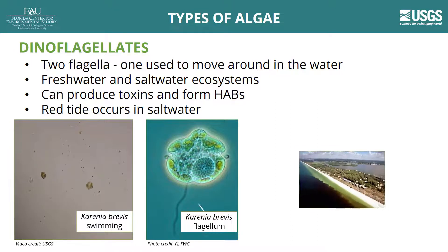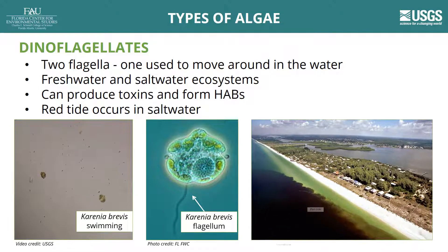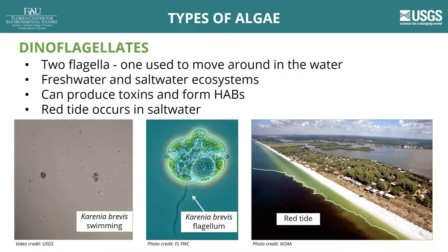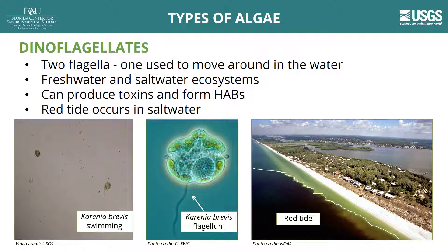Microscopic dinoflagellates have two flagella. One of these flagella trails the organism and looks like a tail and is used to move it through the water. Some species of dinoflagellates can form HABs and produce toxins. Red tides along the west coast of Florida are caused by a type of dinoflagellate called Karenia brevis.